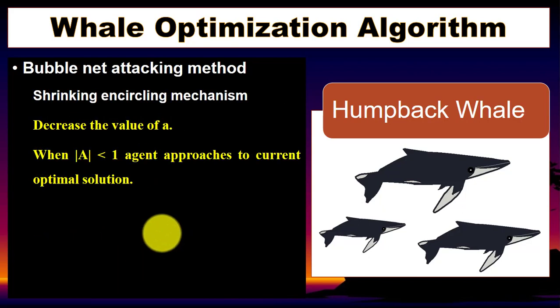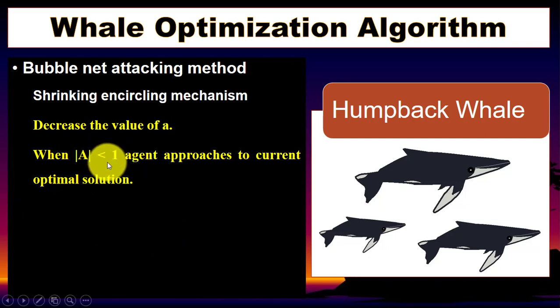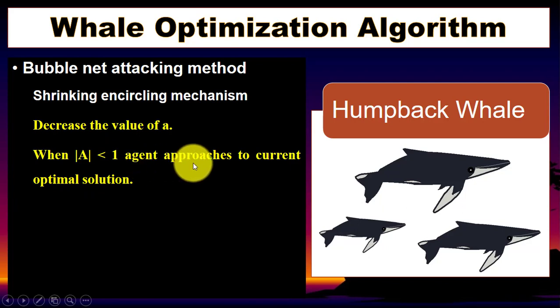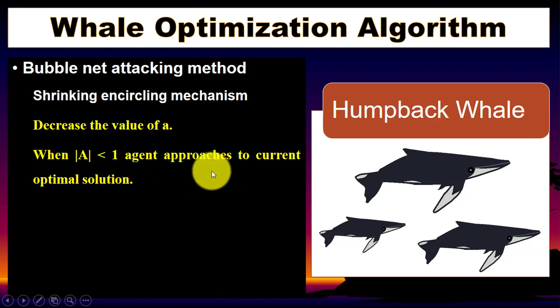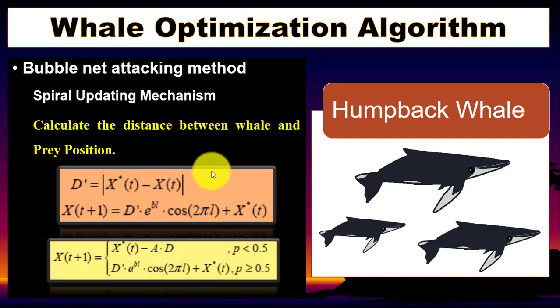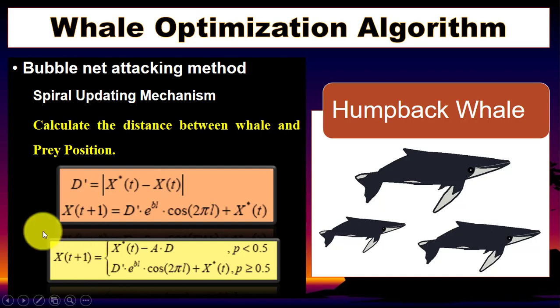In this method, we check the value of A. If the value of A is less than 1, it means the agent approaches the current optimal solution. We calculate the distance between the whale and the prey using these mathematical models, then update the position accordingly.